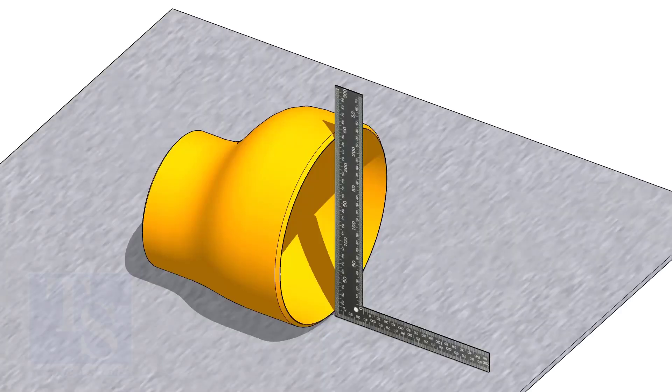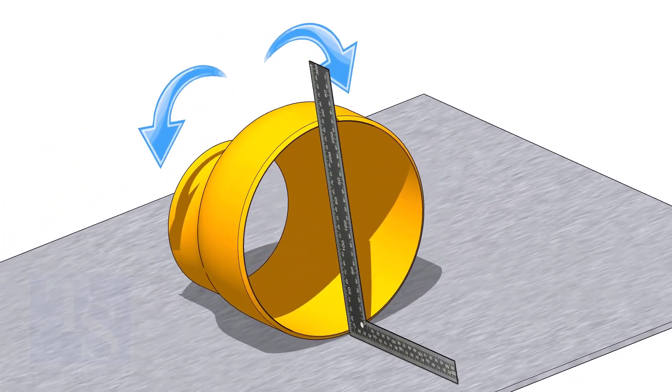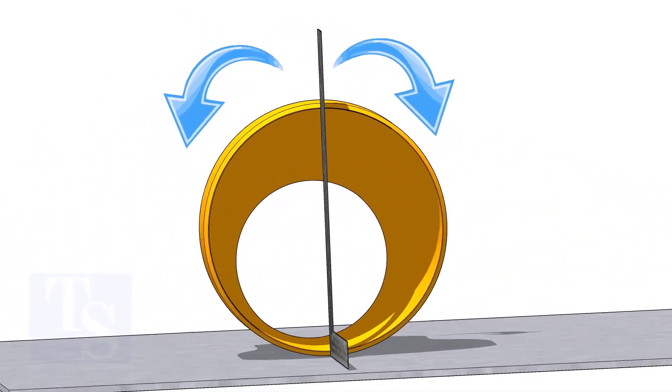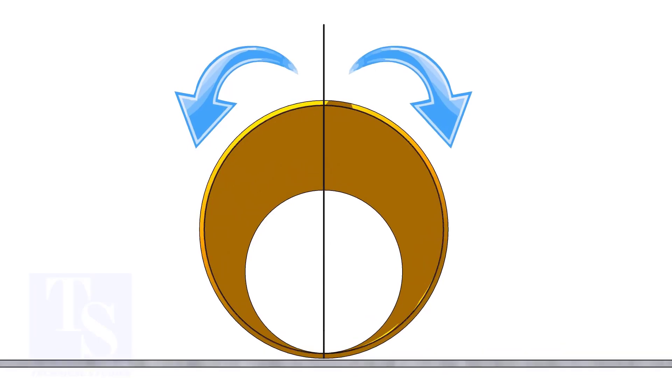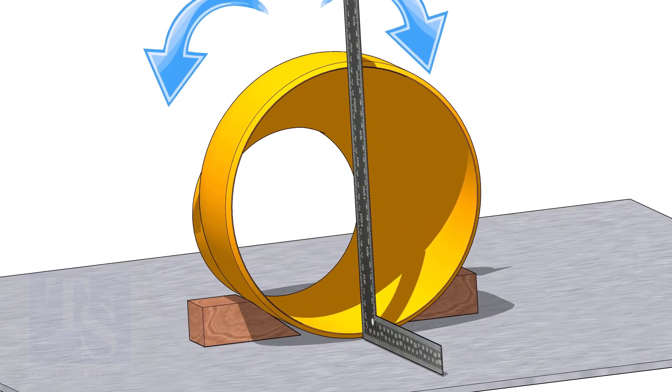Put the reducer on a straight plate. Hold a right angle at the large side of the reducer and gently rotate the reducer back and forth until the face of the reducer is square to the right angle.